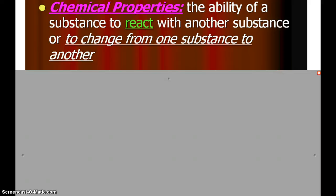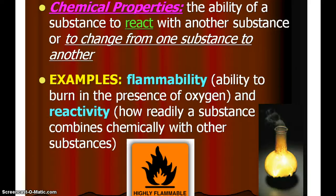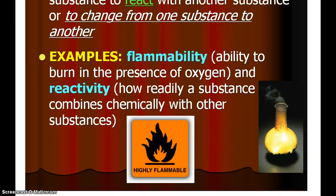Chemical properties describe the ability of a substance to react with another substance or to change from one substance to another. Examples include flammability — whether things are able to burst into flame and burn in the presence of oxygen; gasoline and alcohols are very flammable. Reactivity is how readily a substance combines chemically with other substances. The noble gases, like helium, are inert — they do not react. Different chemicals have different levels of reactivity.